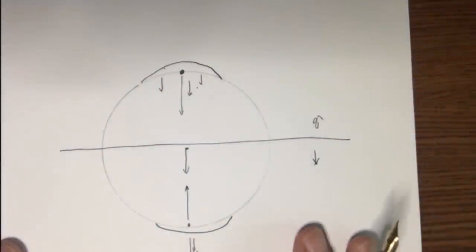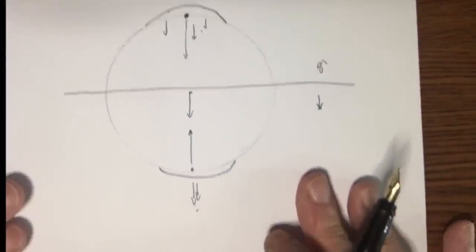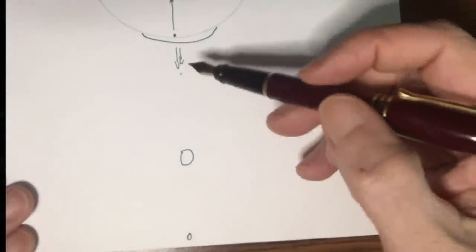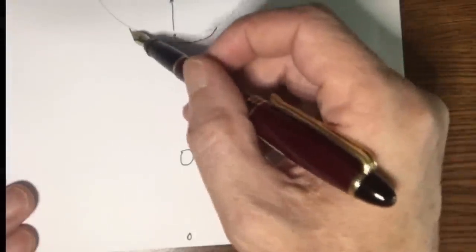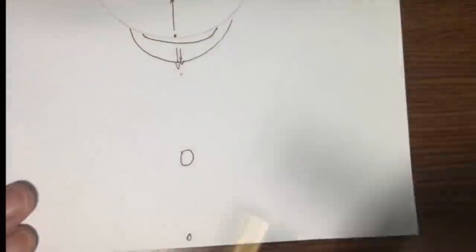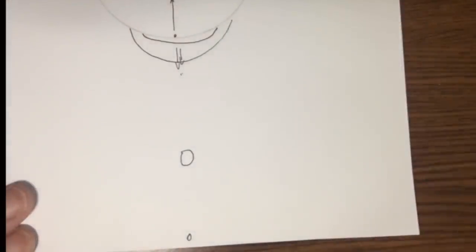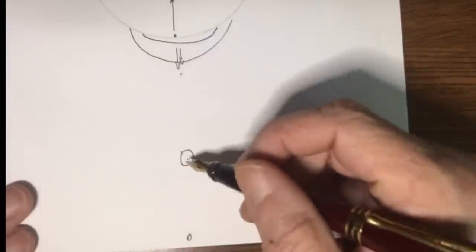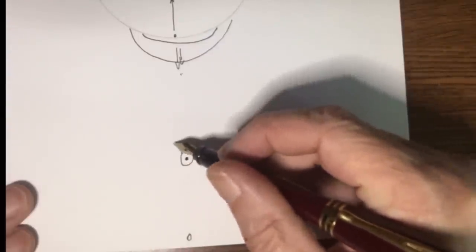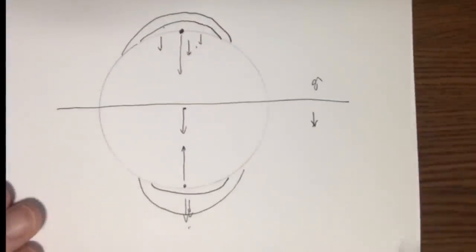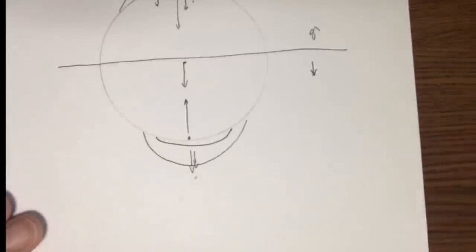Now, let's add one more factor to it. Suppose we have the Sun way out here. You can see that this effect would be the same, except the bulge on both sides would be a little bit greater. This is called a spring tide when the Moon is lined up with the Sun, either on the side of the Sun and we'd have a new Moon or on the opposite side of the Earth and we would have a full Moon.